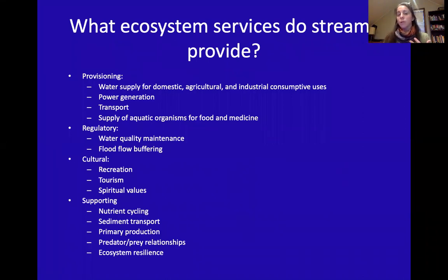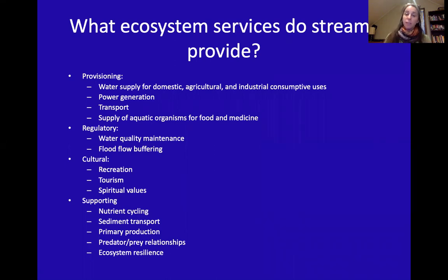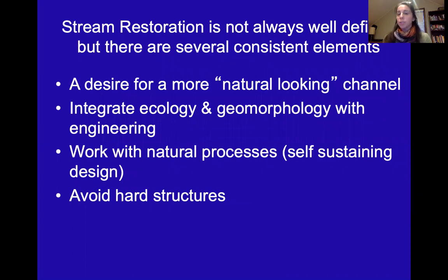When we look at what ecosystem services streams provide, you can think of provisioning — water quality, water sources for agricultural, domestic, and industrial uses, power generation, hydropower, transport, and supply of aquatic organisms for food such as fish, oysters, and algae. Regulatory services include water quality maintenance and flood control. Cultural services include recreation, tourism, and spiritual values.